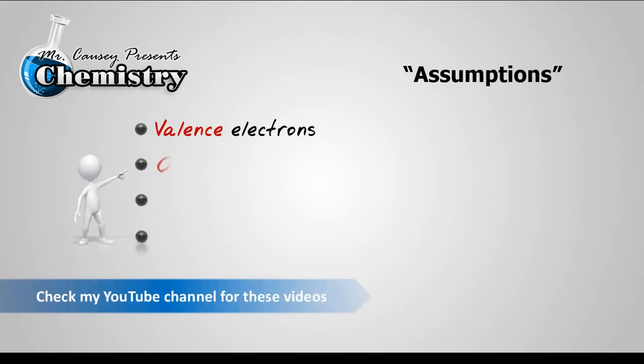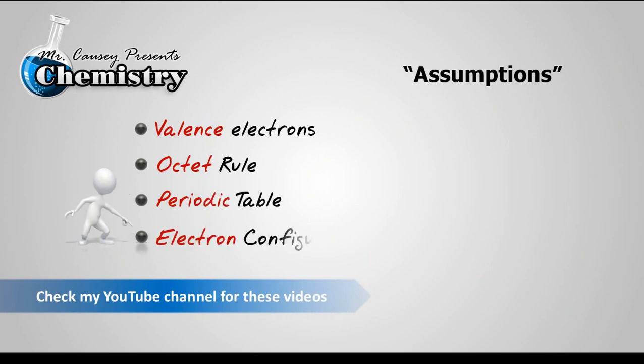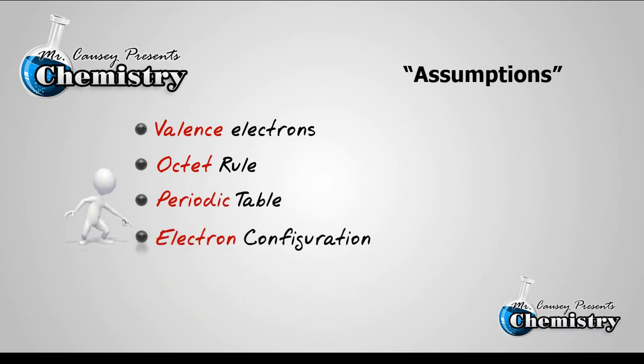Some assumptions I'm going to make. I'm going to assume that you know what valence electrons are, the octet rule, the periodic table, and electron configuration or orbital notation. If you don't know these, you can go to my YouTube channel and find videos on all of these topics. Alright, let's get started.